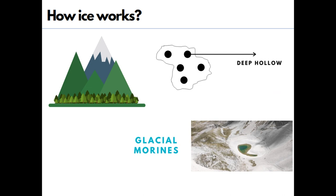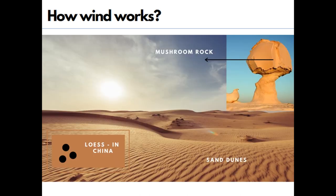The next topic is the work of ice. Glaciers on mountains are like rivers in ice form. When they melt they erode the landscape and leave a deep hollow behind. The eroded materials — sand, soil, and silt — carried by the glacier get deposited, and we call these deposits glacial moraine.